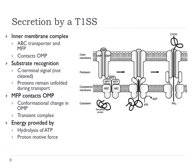What happens is that the inner membrane complex — the ABC transporter and the MFP — contacts the outer membrane protein as the structure assembles. Instead of an N-terminal signal sequence, type 1 uses a C-terminal signal, different from the Sec-dependent system, and this C-terminal signal is not cleaved off — there is no equivalent of a signal peptidase here. As with the Sec-dependent system, proteins remain unfolded as they go through the system. The MFP contacts the outer membrane protein, you get a conformational change and formation of a transient complex, with ATP and possibly the proton motive force driving proteins through.